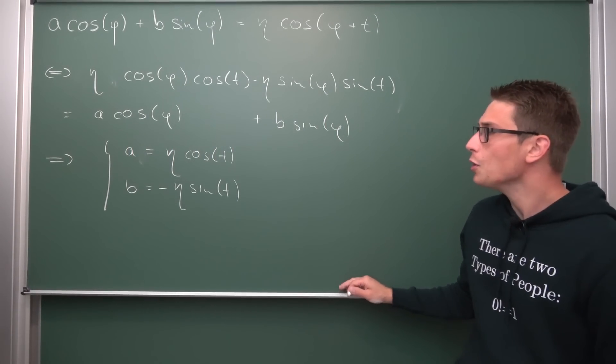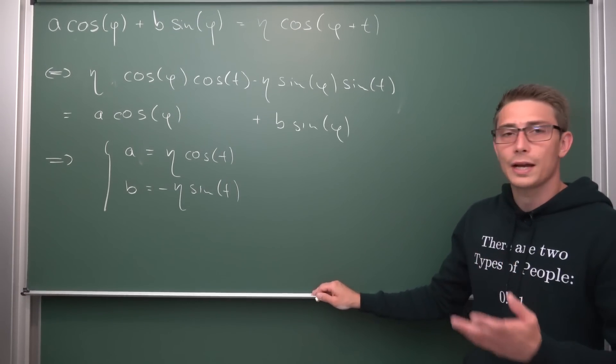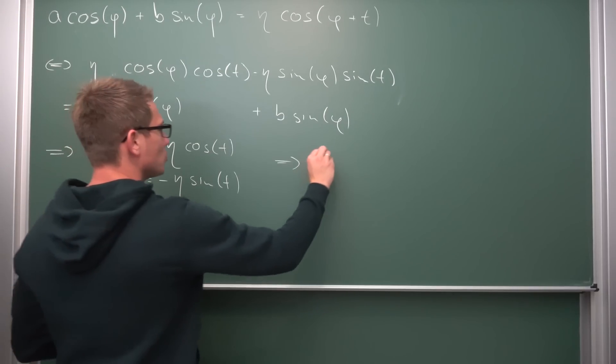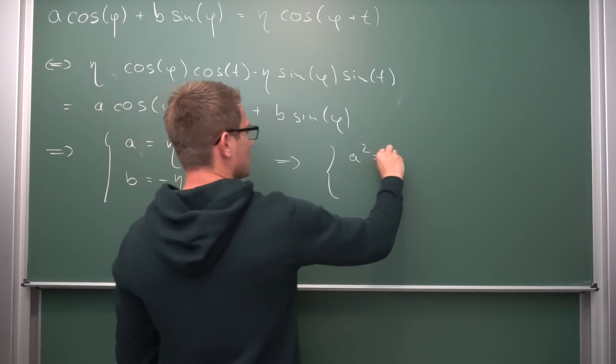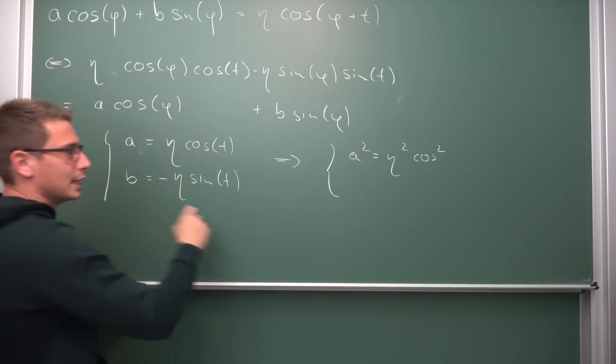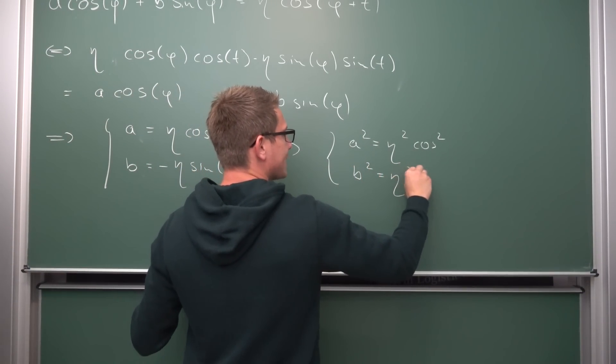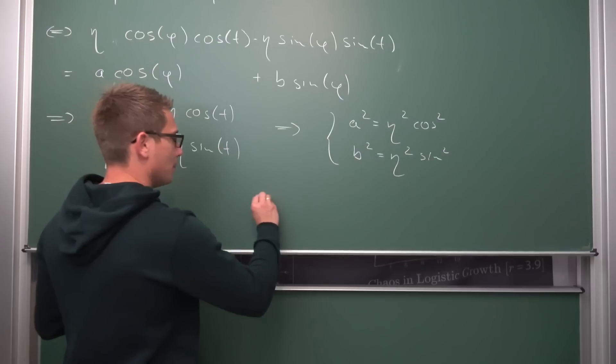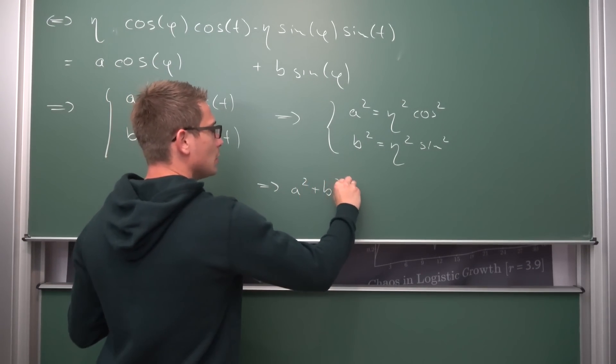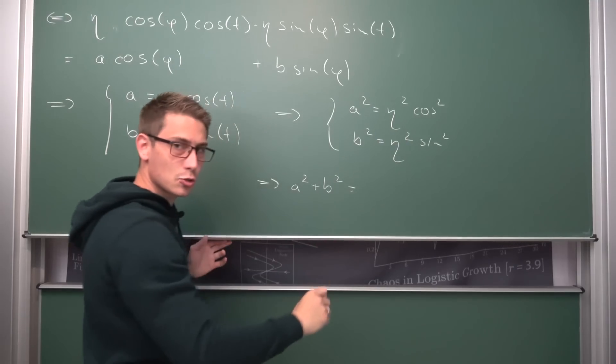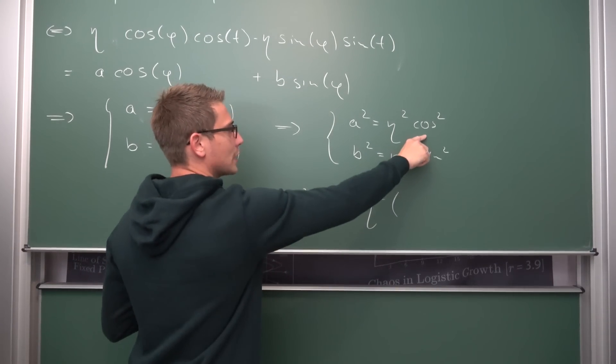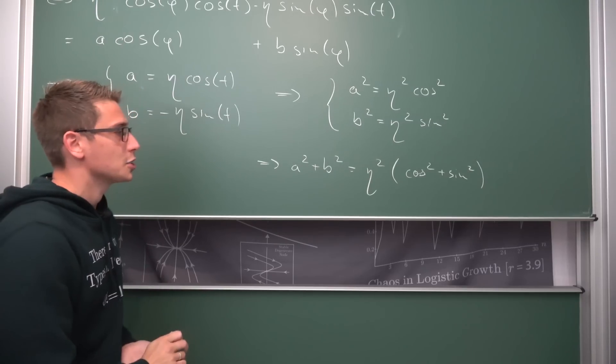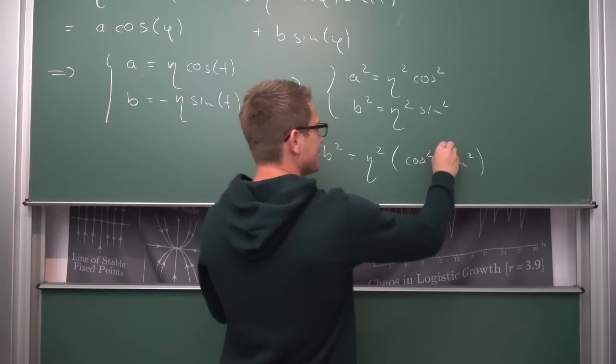And this is basically all the magic that is going to happen here. And now we can start finding out what eta is actually going to be. Well, on the one hand, we are going to notice that if we were to square both equations that we got right here, we are going to get overall that a squared is equal to eta squared times the cosine squared of t. And on the other hand, we are going to get that b squared is equal to eta squared times the sine squared of t. And now we are just going to add these two equations together.